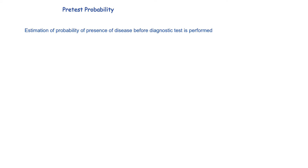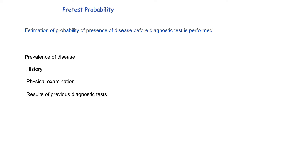First of all, let's discuss pre-test probability. Pre-test probability is the estimation of the probability of the presence of a disease before we have performed a diagnostic test. Information from history, physical examination, results of previous diagnostic tests, and prevalence of disease help us in estimation of pre-test probability. For calculation of post-test probability, we need to estimate pre-test probability in percentage.